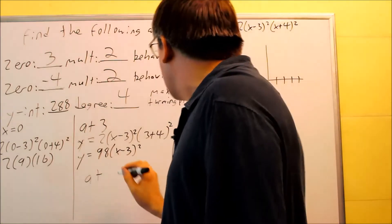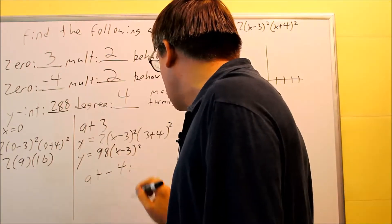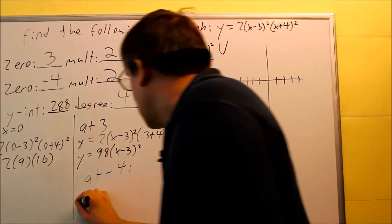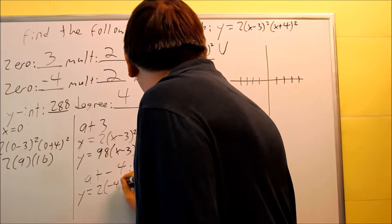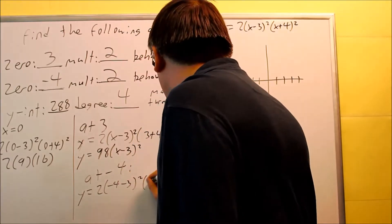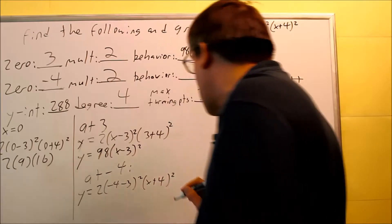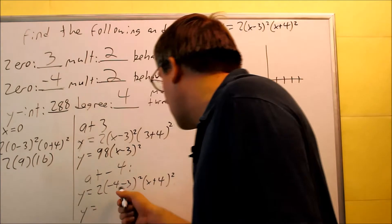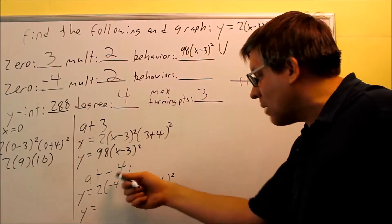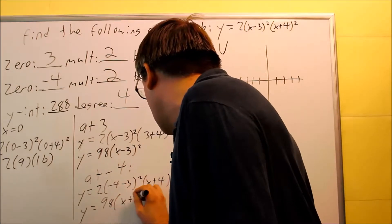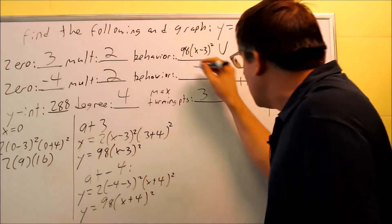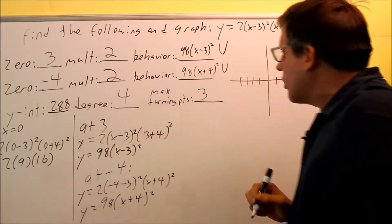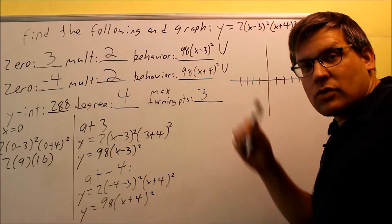So now we're going to do the behavior at negative 4. So negative 4, we're going to put that in the first one only, but not the second one. So that's going to be 2(-4-3)². And then the other one we're going to leave alone. We're going to leave that as (x+4)². When you simplify the first part, you get (-7)² is still going to be 49 times 2. You're still going to get the 98 again. So you get another one where you have a parabola shape. So 98(x+4)², that's another one that's going to resemble a parabola that's opening up.